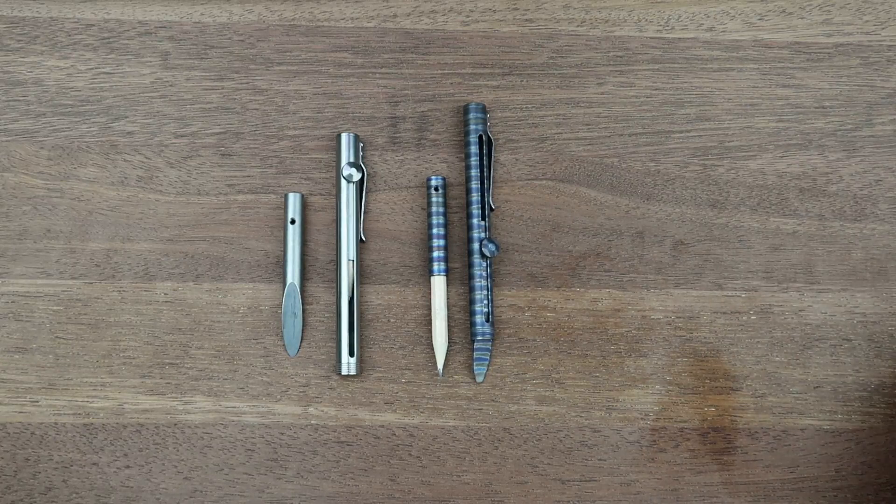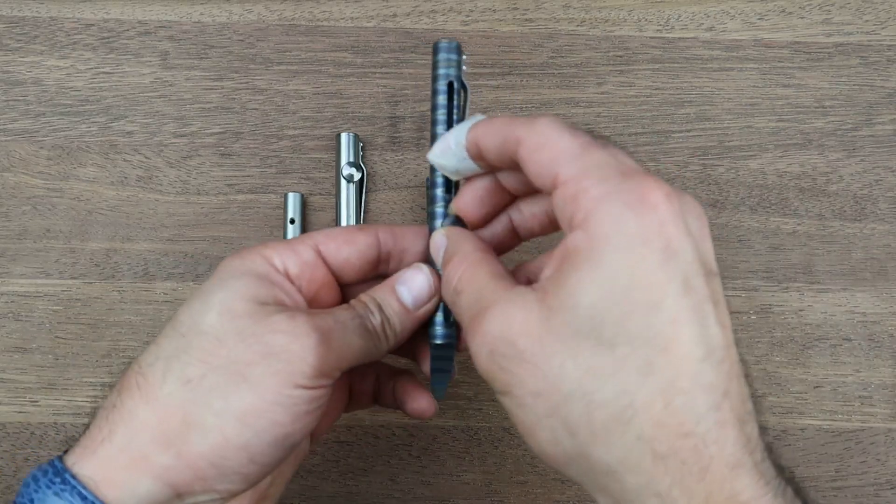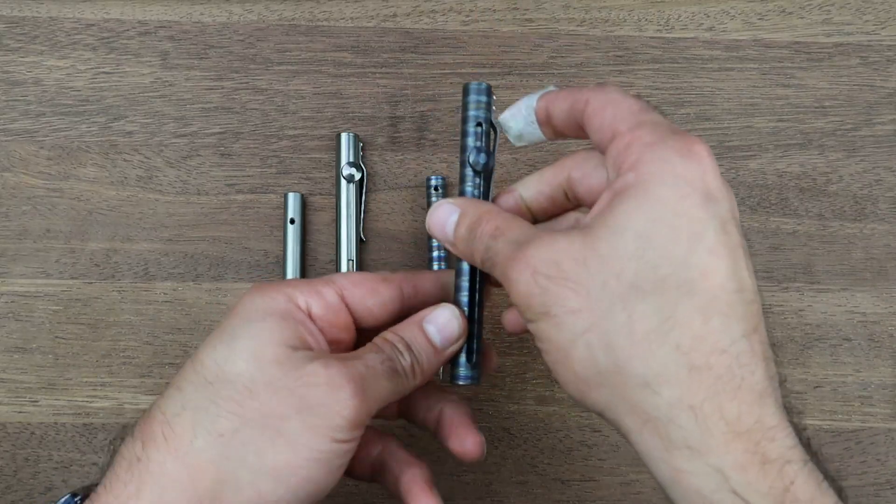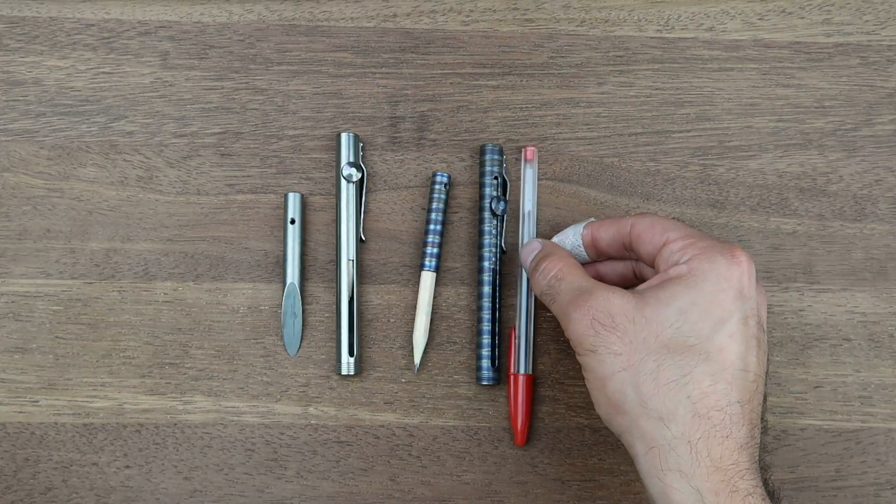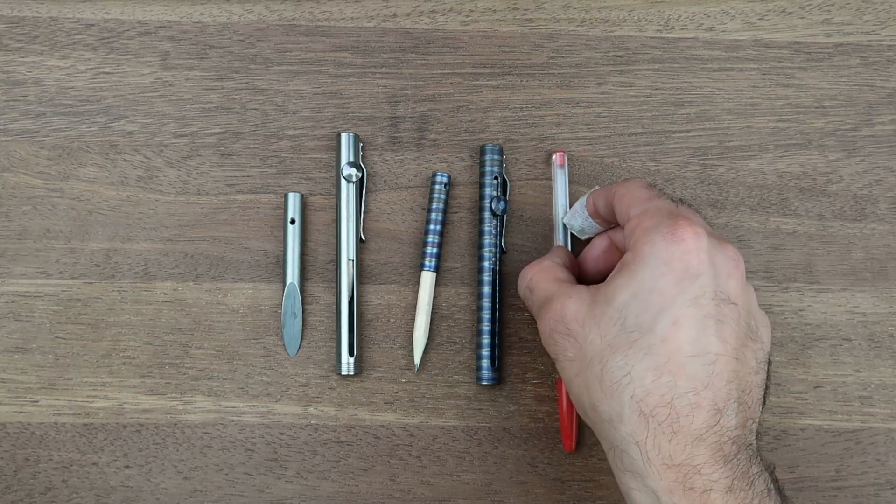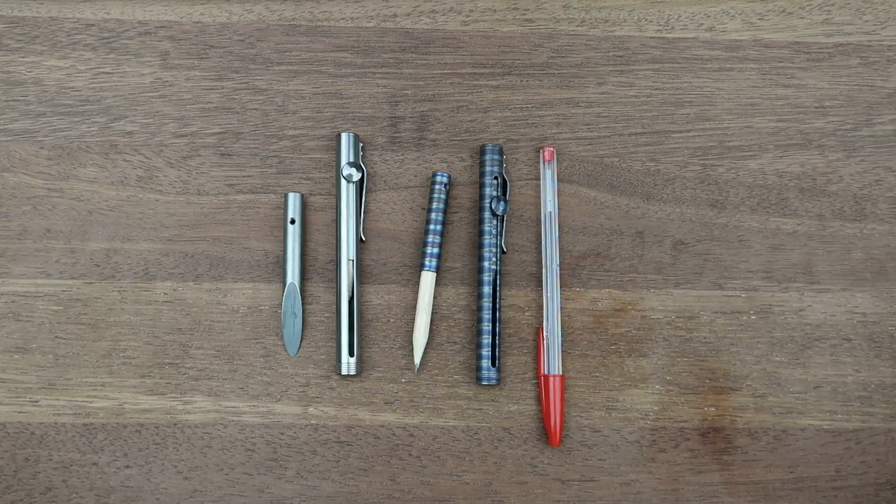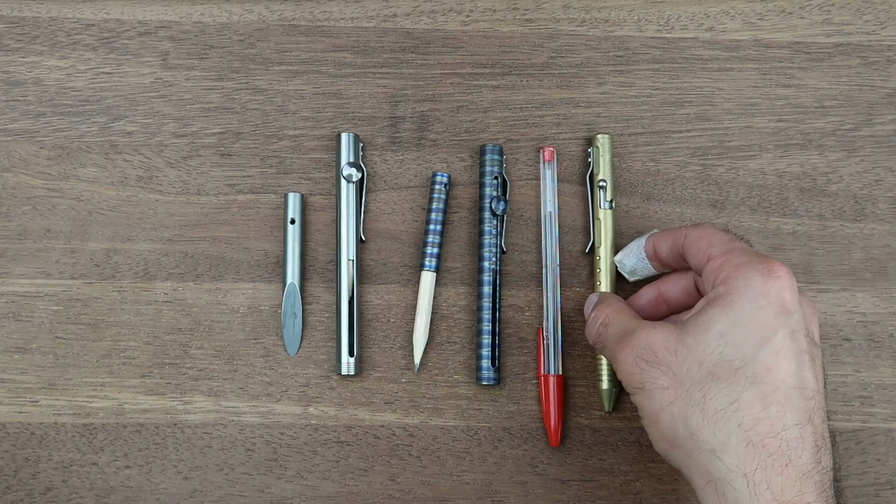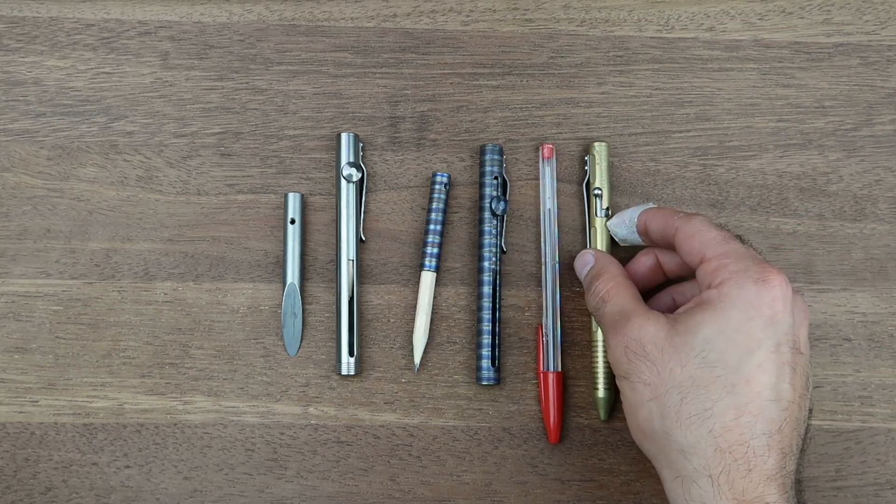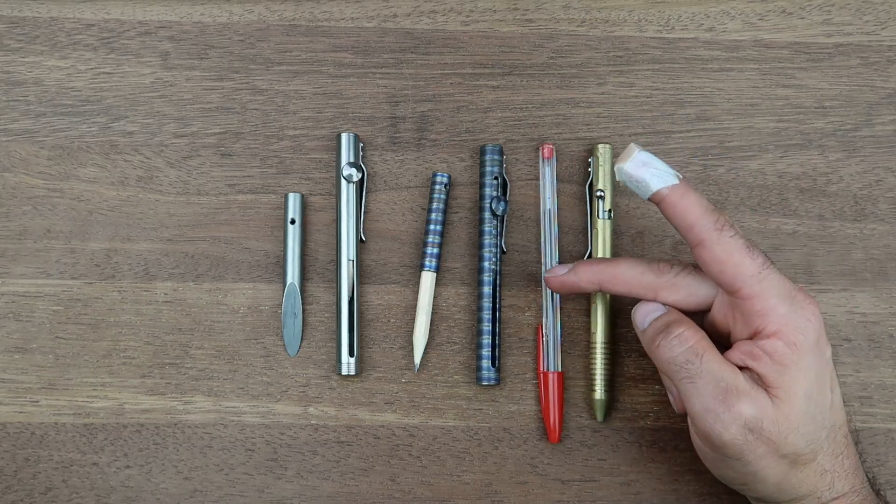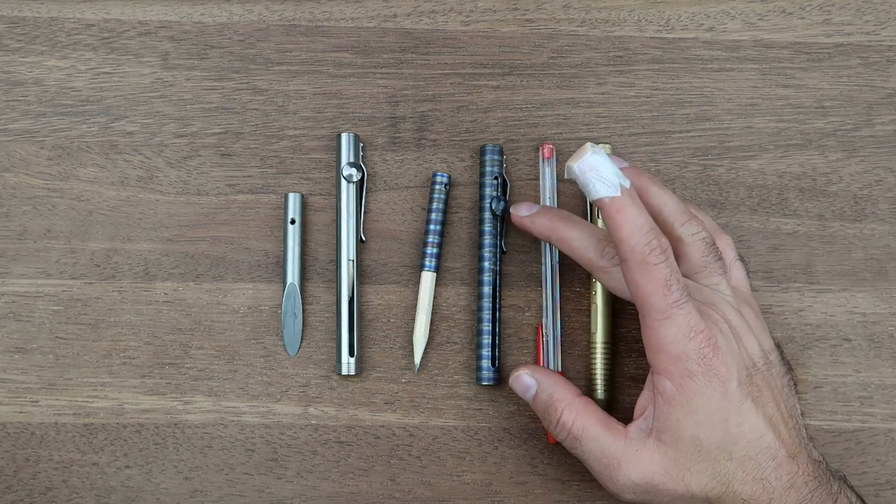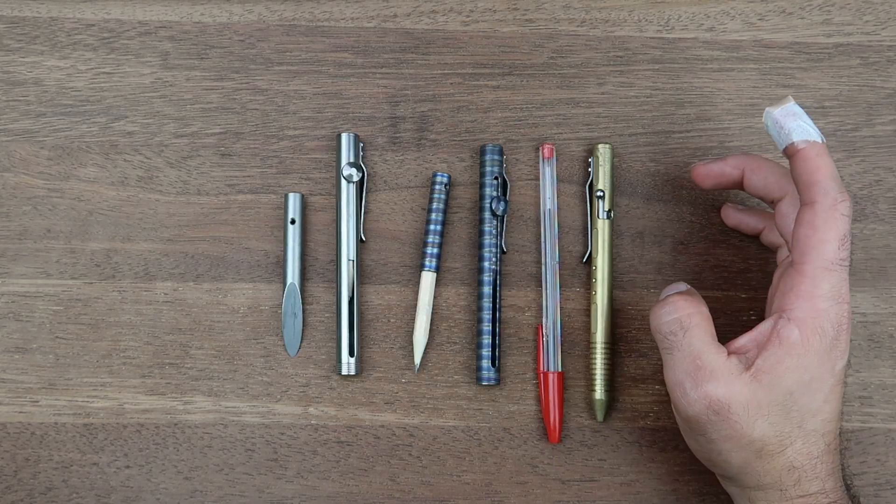For a bit of size comparison, if we close this all the way down, it's going to be shorter than a normal big pen. If we put it next to a felt holder pen, the felt holder Toy Bolt is going to be also longer than that. So again, a medium size in a closed position.